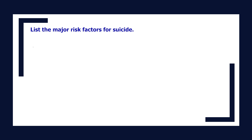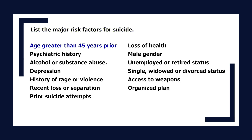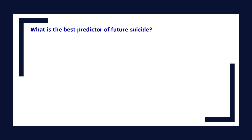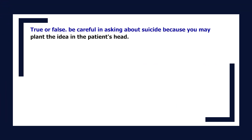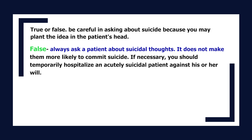List the major risk factors for suicide: age greater than 45 years, prior psychiatric history, alcohol or substance abuse, depression, history of rage or violence, recent loss or separation, prior suicide attempts, loss of health, male gender, unemployed or retired status, single/widowed/divorced status, access to weapons, and an organized plan. The best predictor of future suicide is a past attempt. Always ask a patient about suicidal thoughts — it does not make them more likely to commit suicide. If necessary, temporarily hospitalize an acutely suicidal patient against their will.